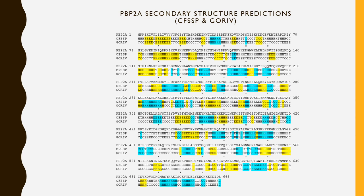On the top line we can see our primary structure from the previous slide, and underneath are the two secondary structure prediction servers used. The CFSSP is the Chou and Fasman secondary structure prediction, and GORE4 is the GORE4 secondary structure prediction method. The H's stand for helices, E's represent beta-pleated sheets, C's represent coils, and T's represent turns.